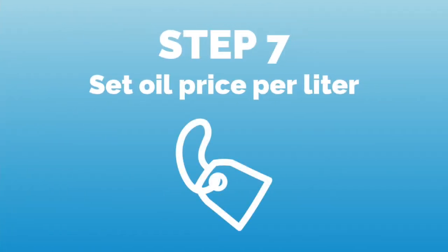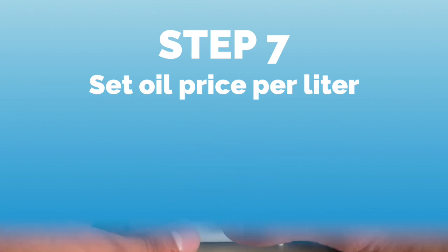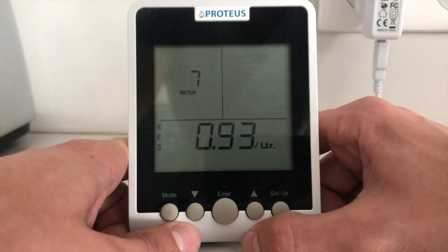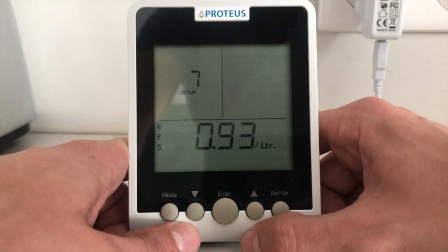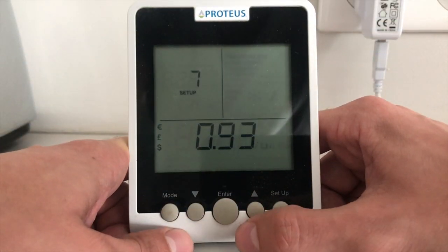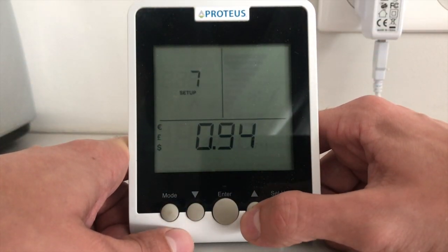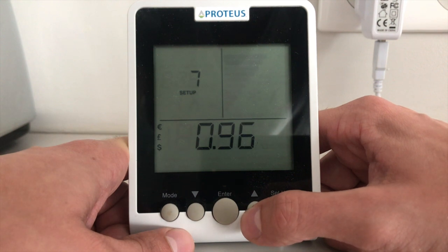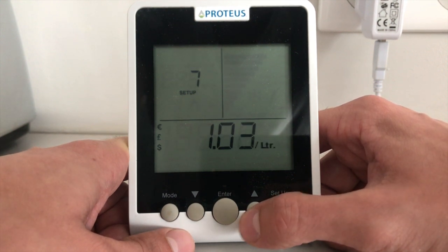In step 7, we set the oil price per liter for the estimation of your approximate expenditure in your local currency. Make sure to check the current price with your supplier.